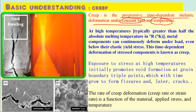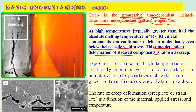Creep occurs under constant load and high temperature — typically greater than half the absolute melting temperature. When a material is operated above half its melting point, it can continuously deform under load even below the elastic yield stress. This time-dependent deformation of a stressed component is known as creep. A main example is tubes in furnaces or heaters, where we can see branching cracks.